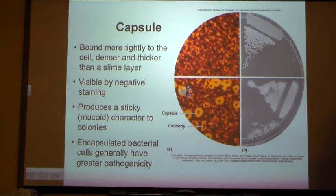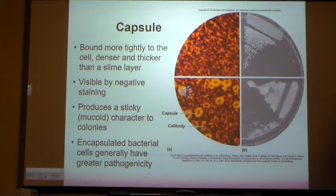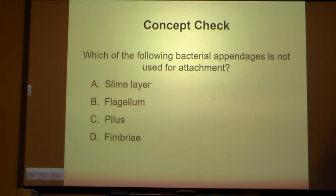We'll talk more about that when we get to the immune system, but having a capsule usually increases the virulence because it basically shields itself from the immune system. The immune system only sees a lot of sugar — it doesn't necessarily recognize the bacterial component. So having a capsule increases virulence.